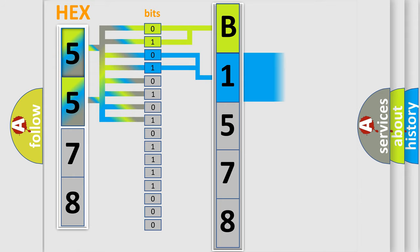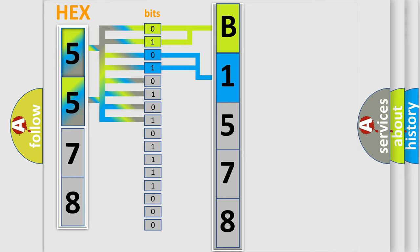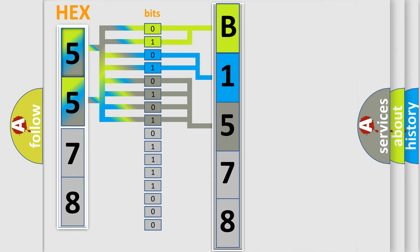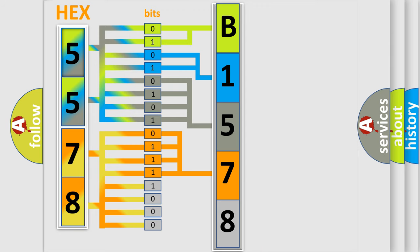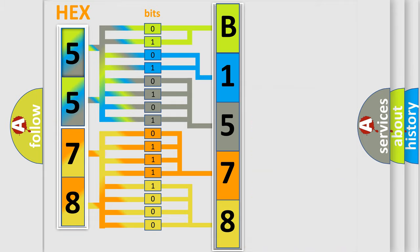The next two bits determine the second character. The last bits of the first byte define the third character of the code. The second byte is composed of a combination of eight bits. The first four bits determine the fourth character of the code, and the combination of the last four bits defines the fifth character. A single byte conceals 256 possible combinations. We now know how the diagnostic tool translates the received information into a more comprehensible format.